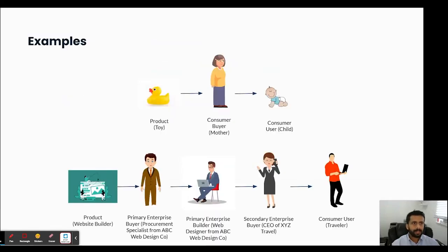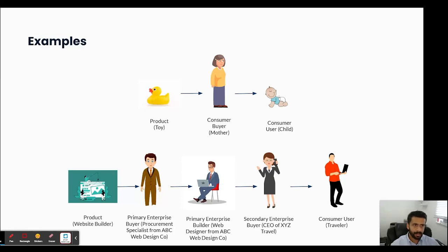Let's look at a couple of simple examples of who might be the buyers, users, and builders. The first example is a toy. In most cases, the buyer and user are almost certainly going to be different, because the buyer is mainly an adult who gives the toy to their child or gifts it to someone else's child. So the product has to be designed taking into account all the needs of the end user, but at the same time marketed to the buyer who makes the decisions for the end user.